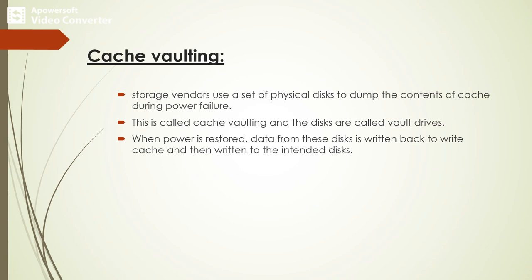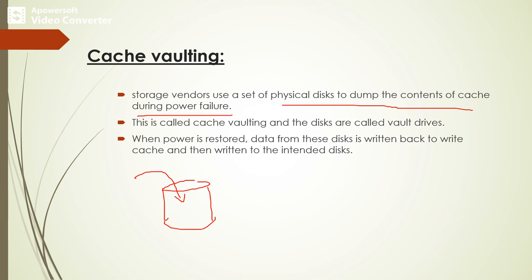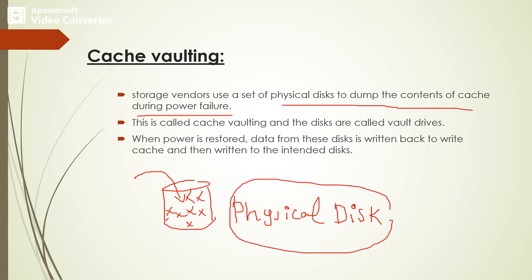The next concept is cache vaulting. The storage vendors use a set of physical disks to dump the contents of the cache during a power failure. When a power failure occurs, the cache data is copied into a physical disk. This physical disk is called a vault drive. When power is restored, the data can be copied from the physical disk back into the cache again.